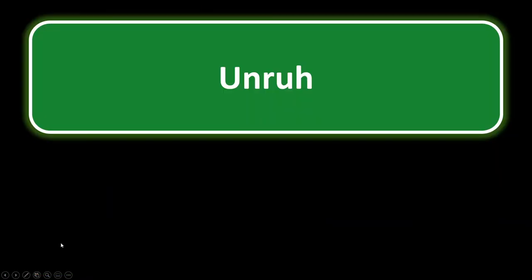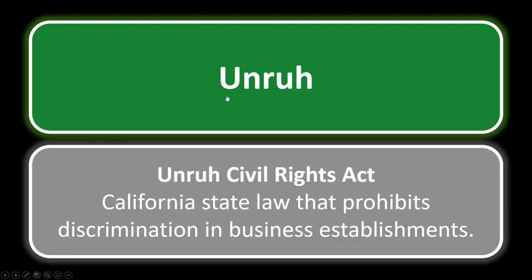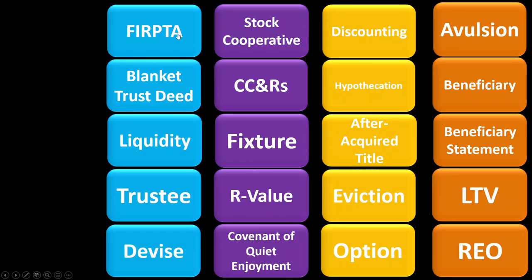Unruh. You should be thinking of fair housing in California — a state-specific fair housing act called the Unruh Civil Rights Act. This is the California state law that prohibits discrimination in business establishments. When you think of Unruh, automatically think of business. We also have the Holden Act, which deals with prohibiting discrimination in lending. So when you think of Unruh, think of the California fair housing law that prohibits discrimination in business establishments.